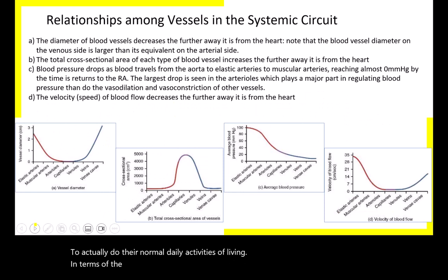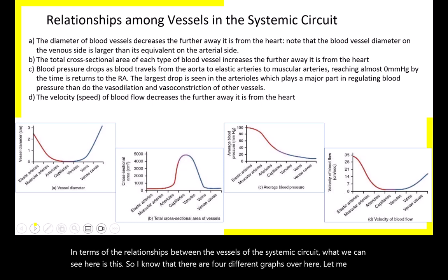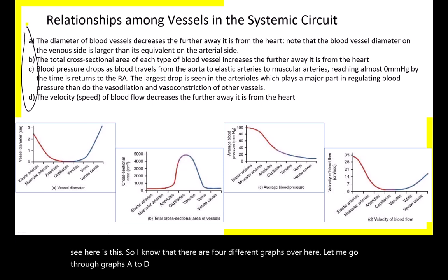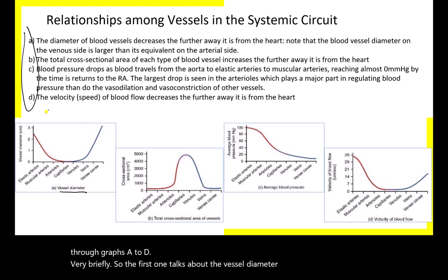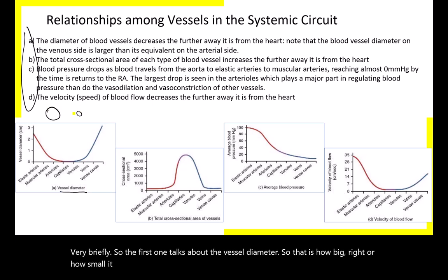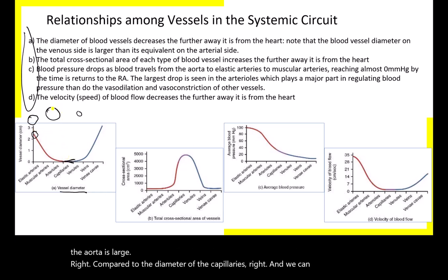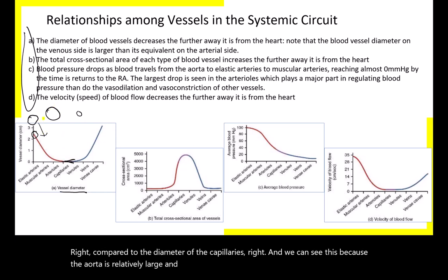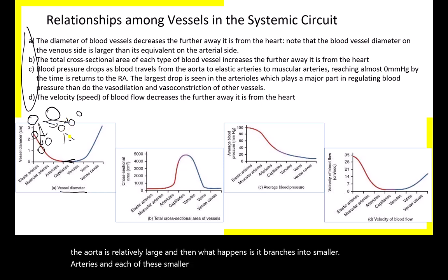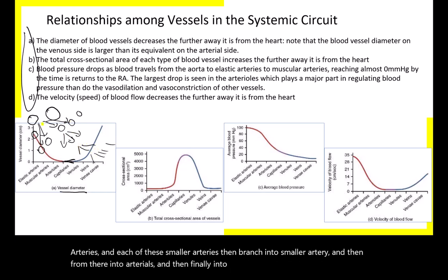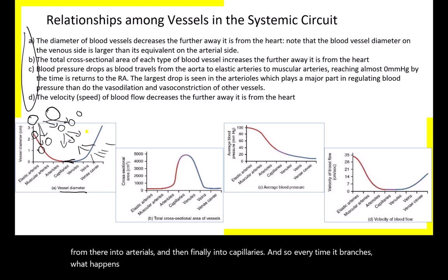There are four graphs showing relationships between vessels in the systemic circuit. First, vessel diameter: the aorta is large, and as it branches into smaller arteries, arterioles, and capillaries, each successive vessel gets smaller in diameter. Second, total cross-sectional area: although individual vessels get smaller, the total cross-sectional area increases because blood splits into many more vessels at each level — one aorta branches into many elastic arteries, then many more muscular arteries, arterioles, and a huge number of capillaries.